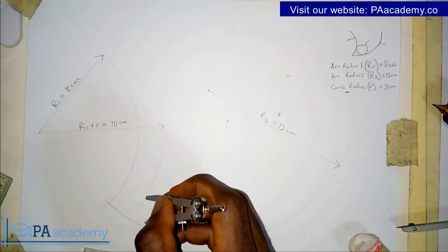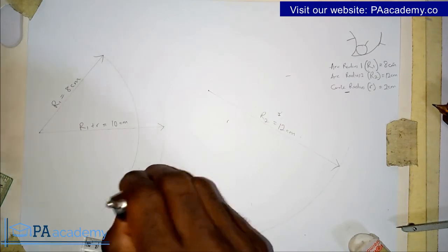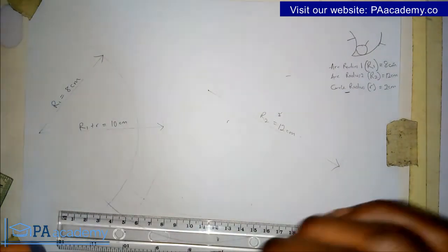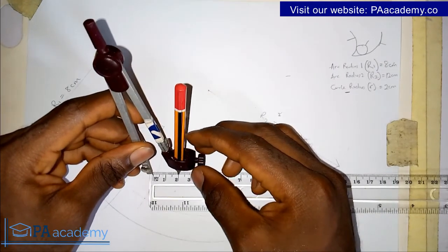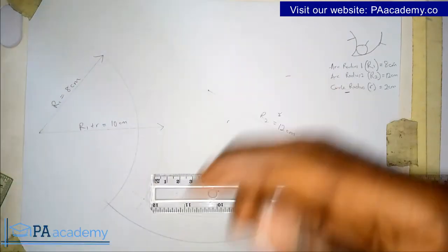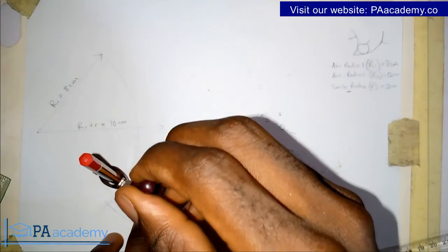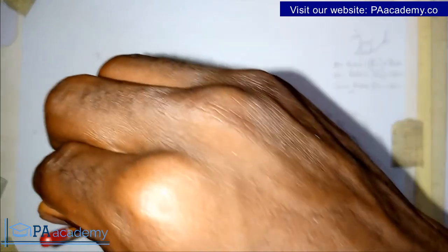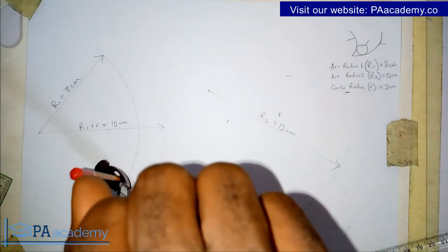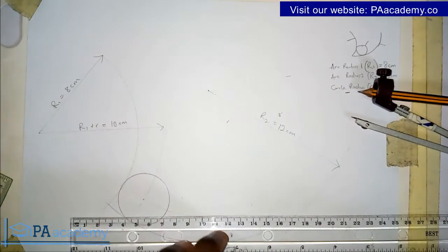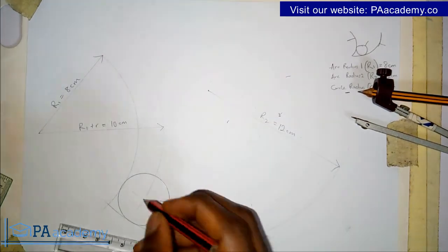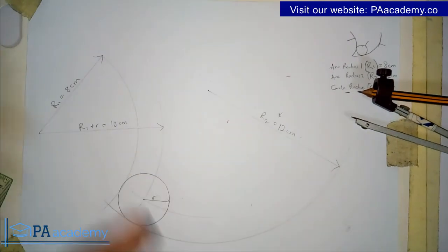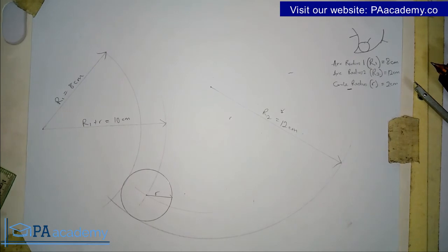The point where both arcs intercept represents the center of the circle we are going to draw. Now I measure 2 cm with the compass, place it at that center point, and draw the circle. You can see we already have a circle. From that center point to the circle is our small r, the circle radius of 2 cm. This is how you draw a circle of a given radius to touch two given arcs.